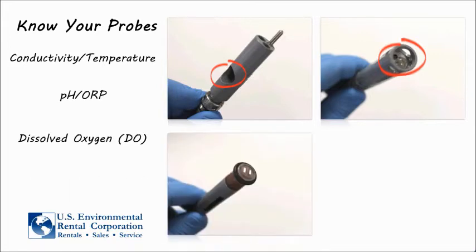The dissolved oxygen, or DO, probe is the final probe that can be installed on the 600XL or 600XLM model. We'll discuss DO probe maintenance later in this video.